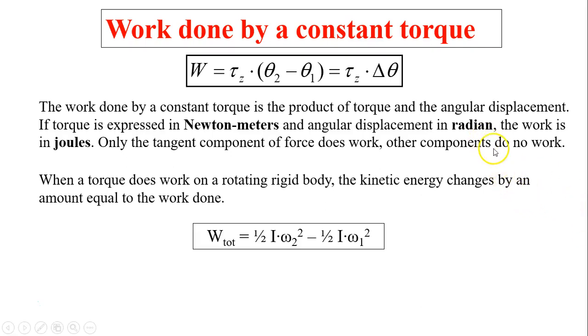What are the other components? It could be the radial component that doesn't do any work, or the component parallel to the rotational axis. None of those cause rotation. When a torque does work on a rotating rigid body, the kinetic energy changes by the same amount equal to the work done.